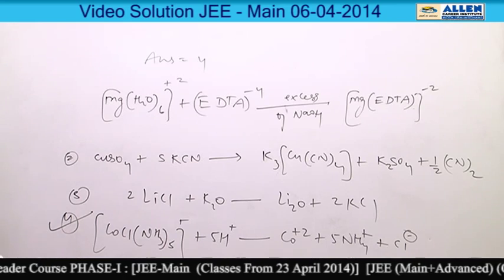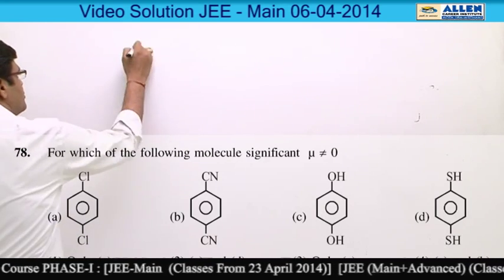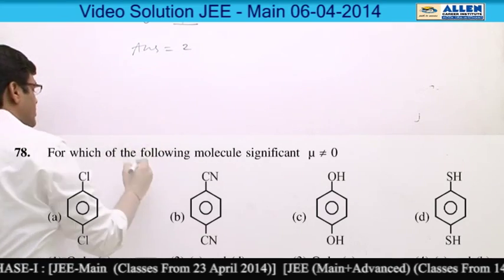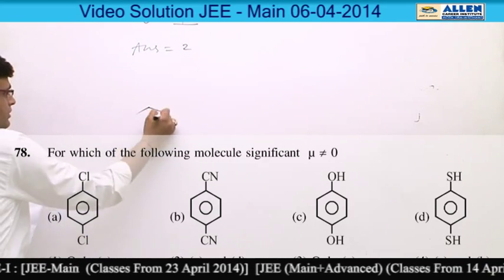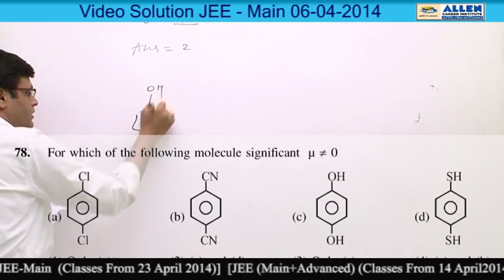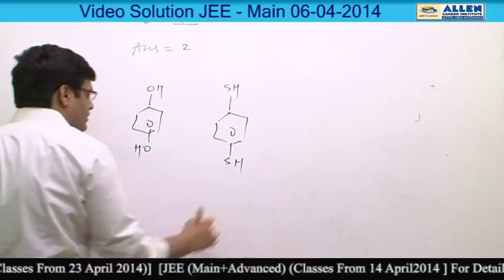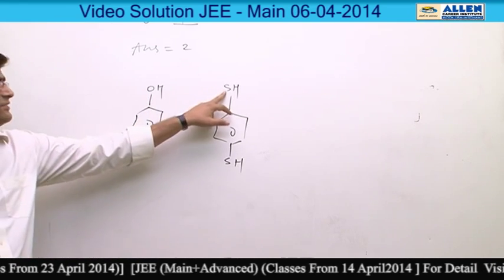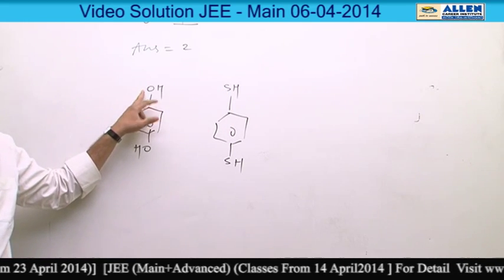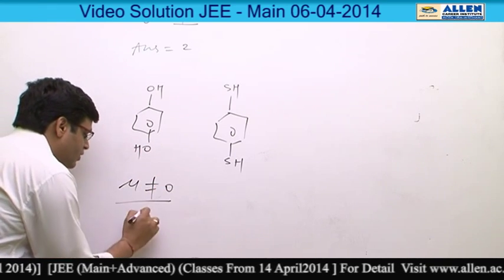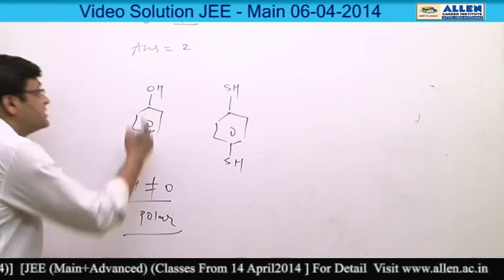Answer is 2 because lone pair on oxygen and sulfur—both are out of plane, so dipole moment is not zero and both are polar. So answer is 2.